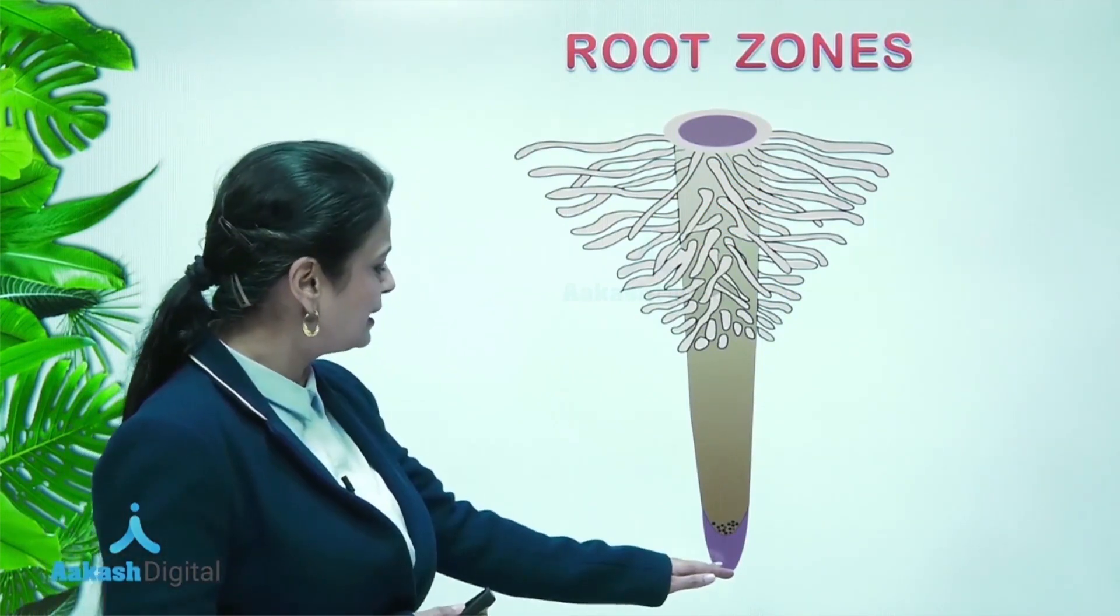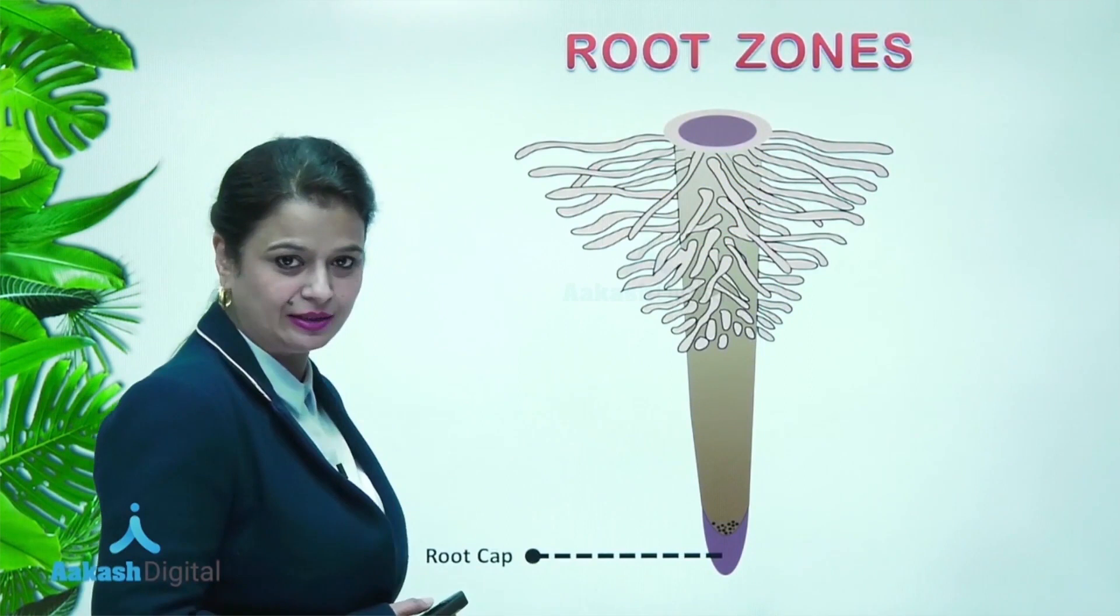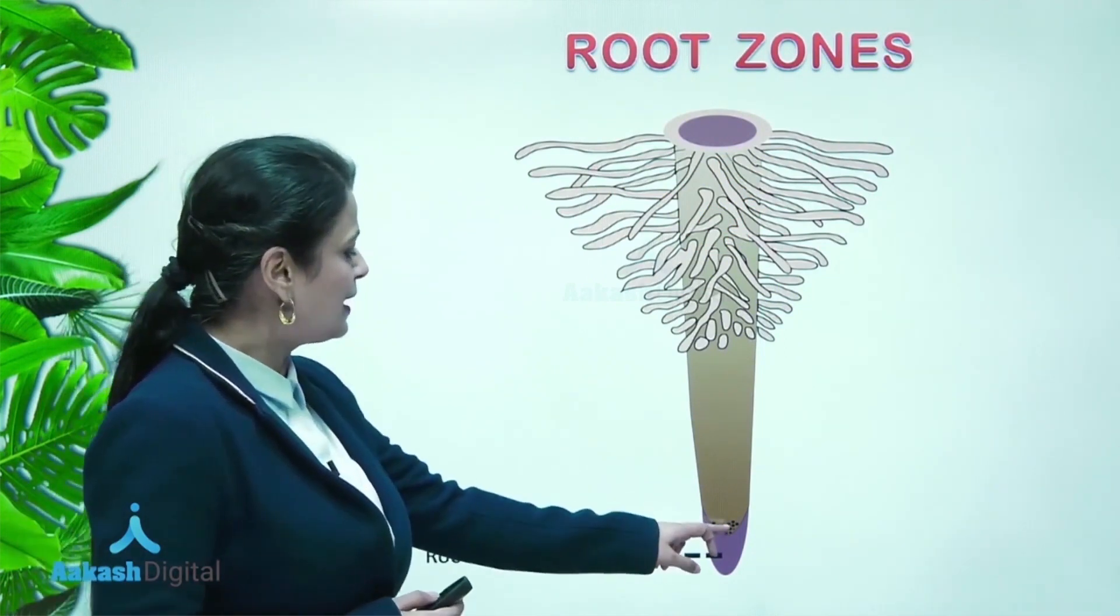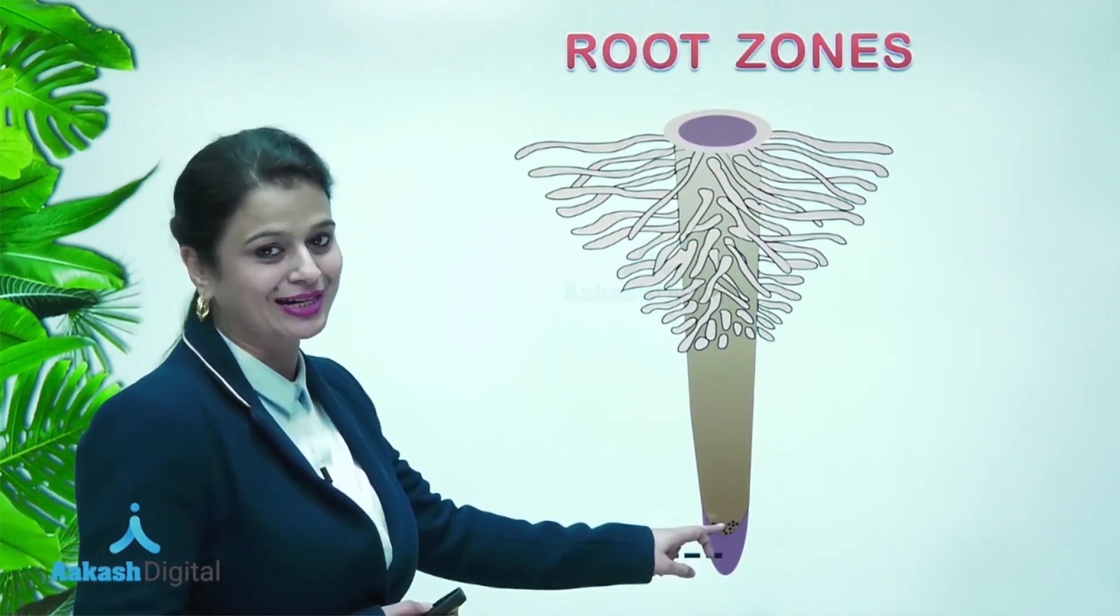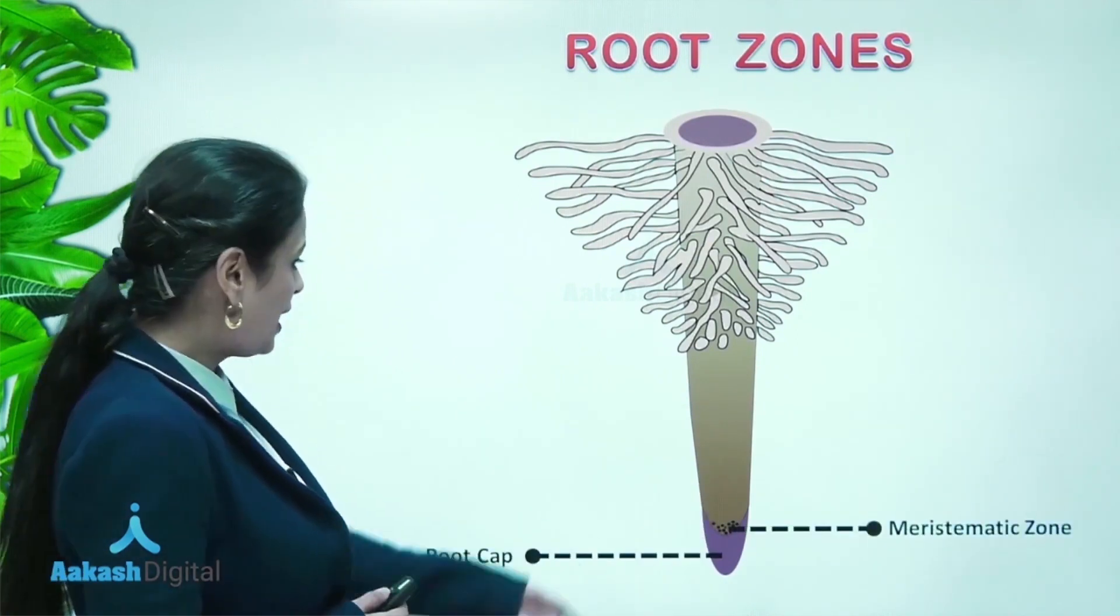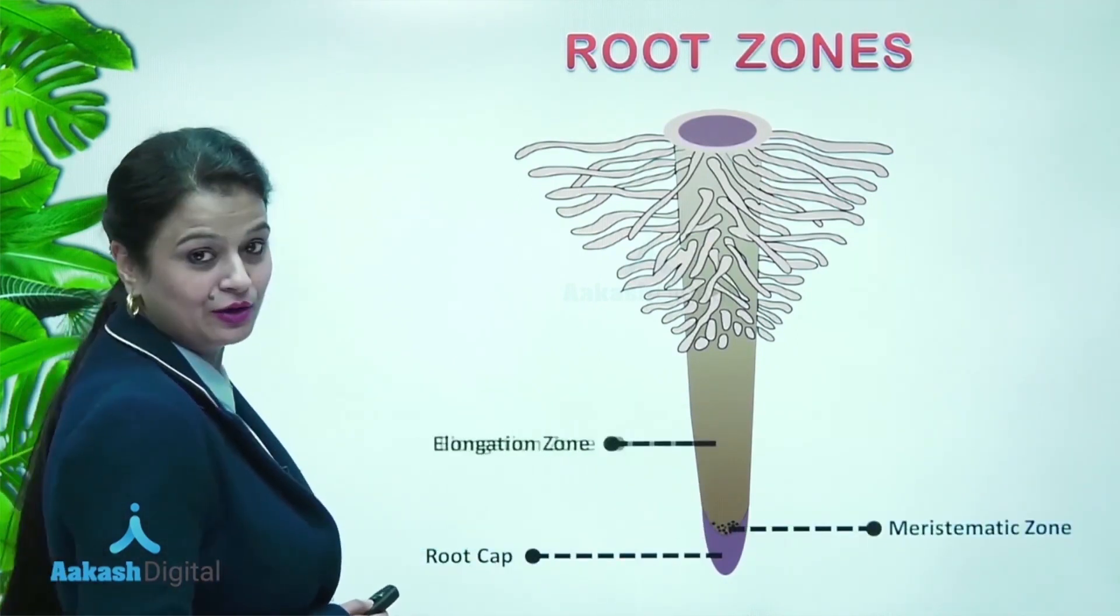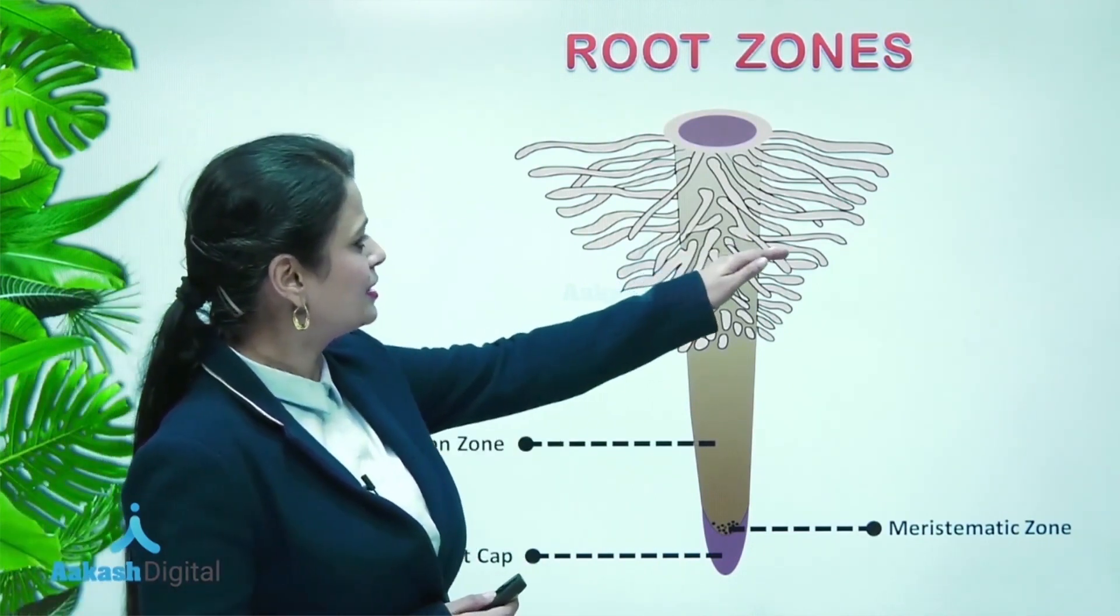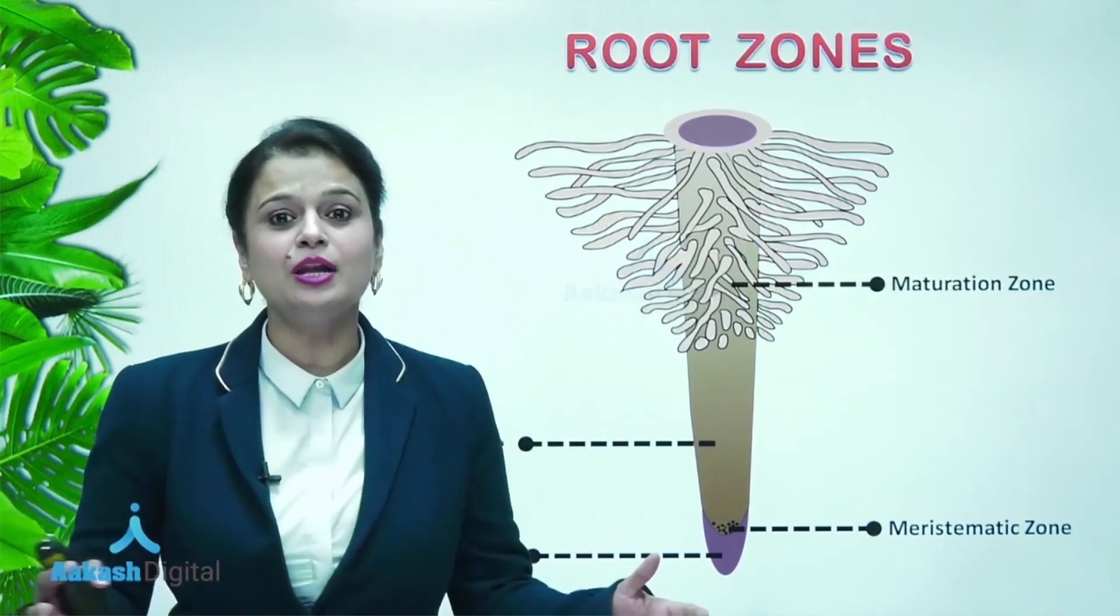In the previous level, you have learned very well about the root zones. This part is root cap, which is protective in nature. This part possesses cells which are actively involved in division - this is meristematic zone. And this one is elongation zone, and this is maturation zone.